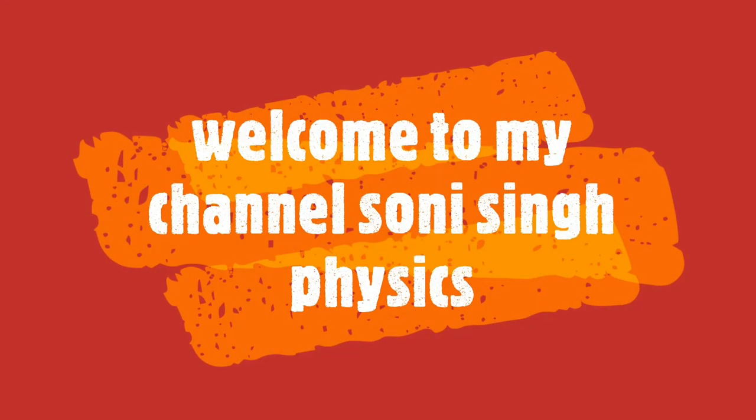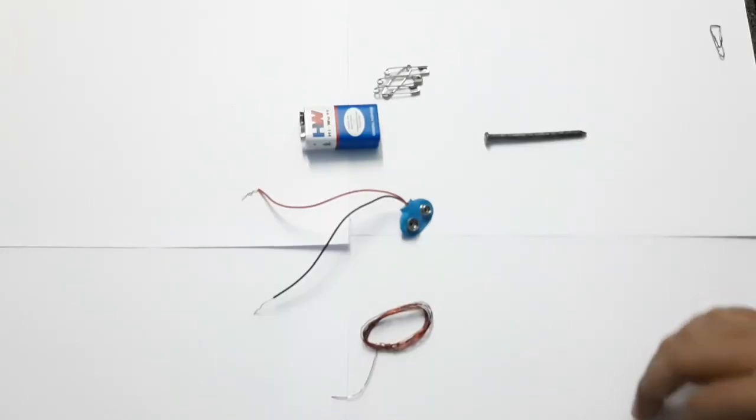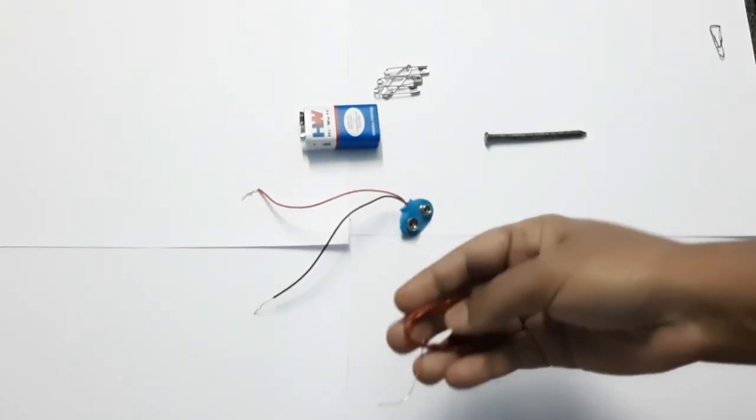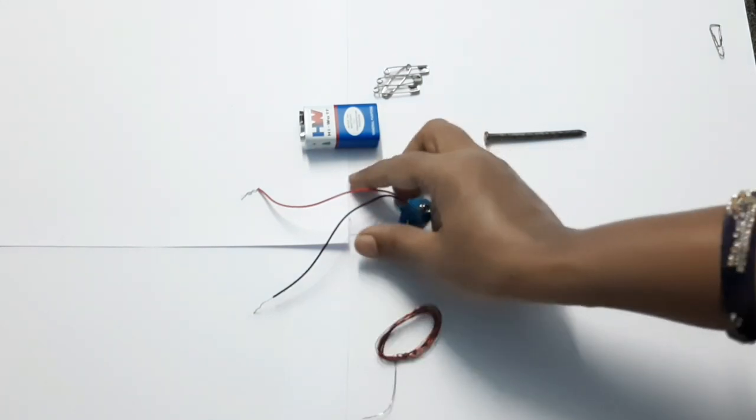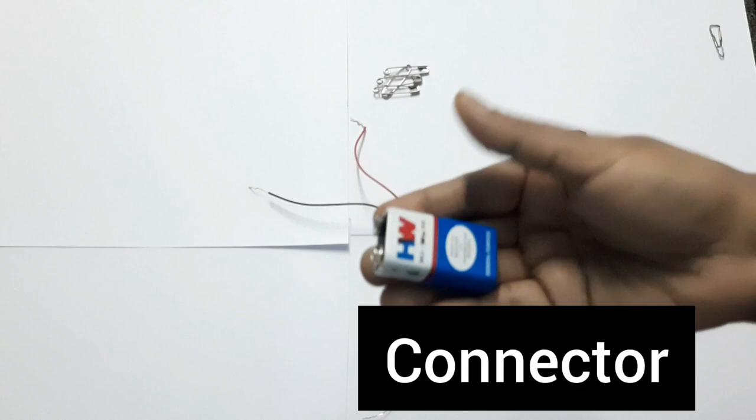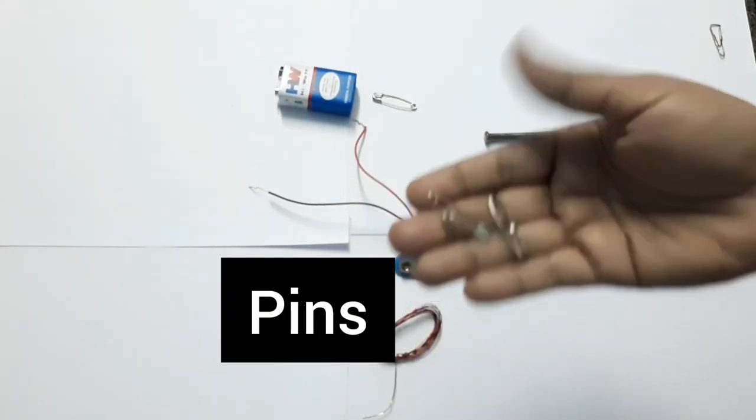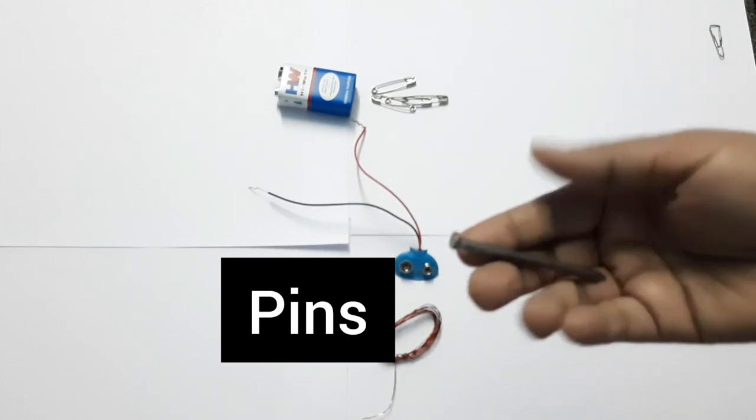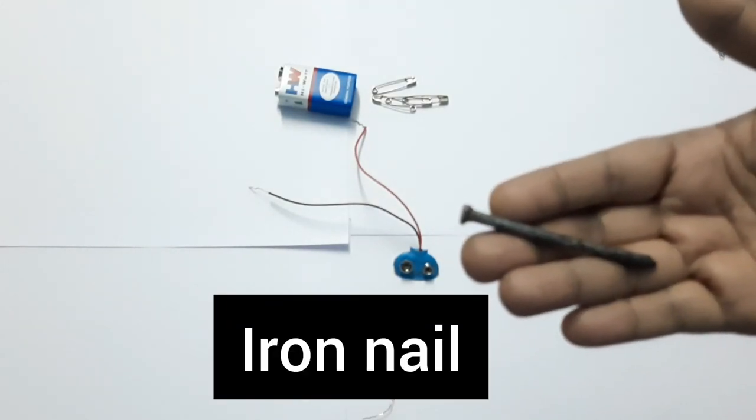Welcome to my channel Sony Saying Physics. To make an electromagnet, we need two to three meters of insulated copper wire, a connector, a nine-volt battery, some safety pins, and one iron nail. The iron nail should be new.